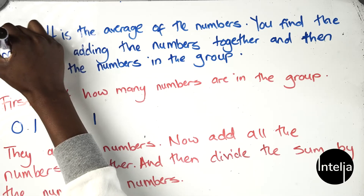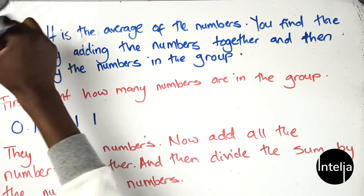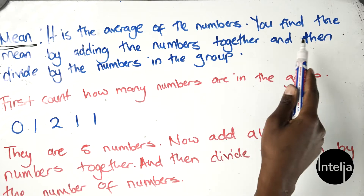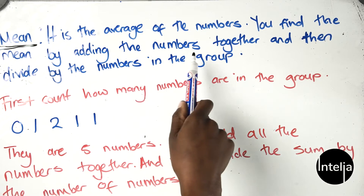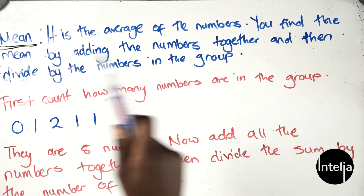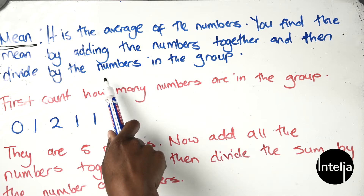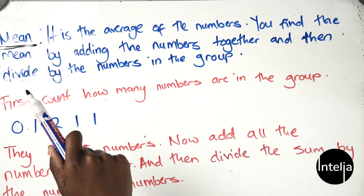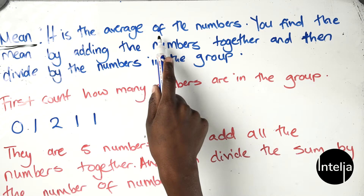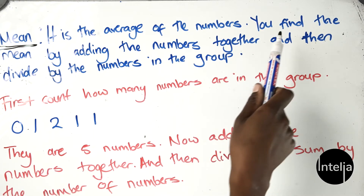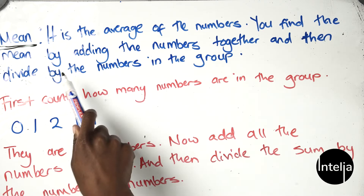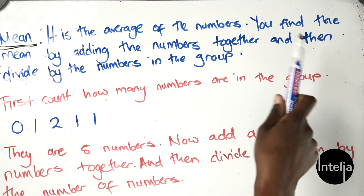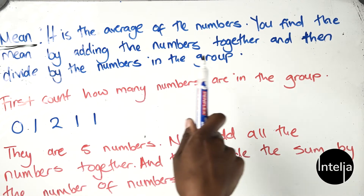The mean is the average of the numbers. You find the mean by adding the numbers together and then dividing by the number of numbers in the group.